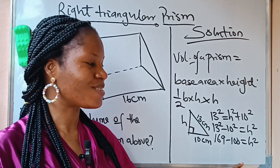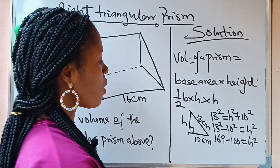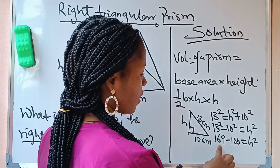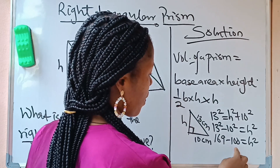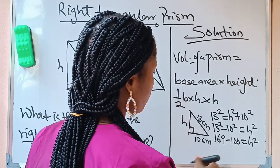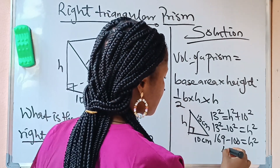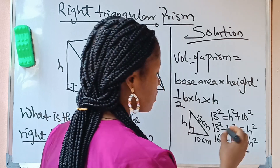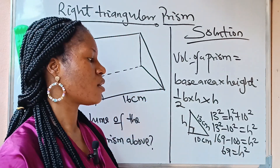169 minus 100 gives us 69, so 69 is equal to h squared.